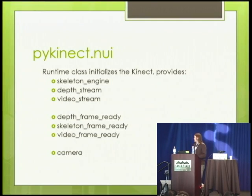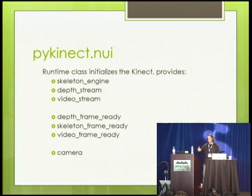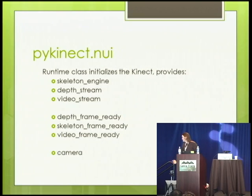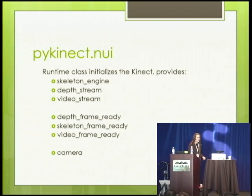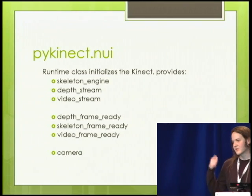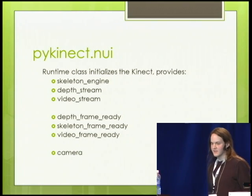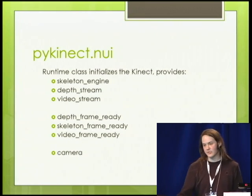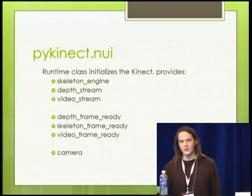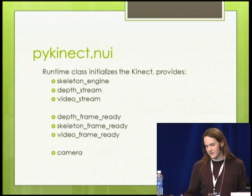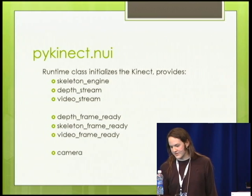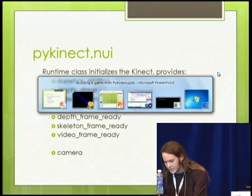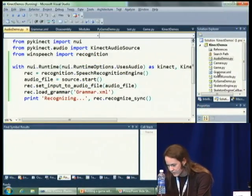So this is a summary of the API. We have the synchronous versions with the skeleton engine, the depth stream, and the video stream where I can call and just get current images and current skeletons. We have the async versions where I can give it a callback and pump those into whatever event loop I'm doing for more classical GUI programming. And we have the camera object — let's take a quick look at that.